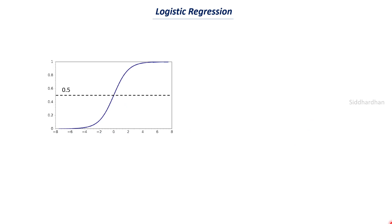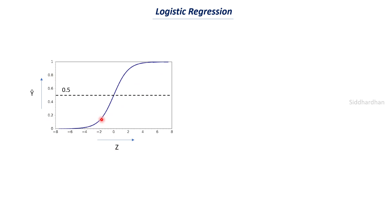I explained this in my previous video — I will just give you a quick recap. A logistic regression model curve looks something like this; you can call this curve a sigmoid curve or an S-shaped curve. The x-axis value is generally z, and the y-axis value is y-hat. Your y-hat values range from 0 to 1, while your z values can range from negative to positive values.